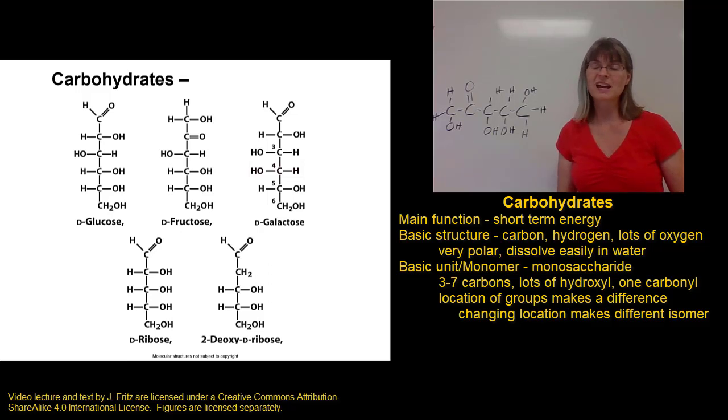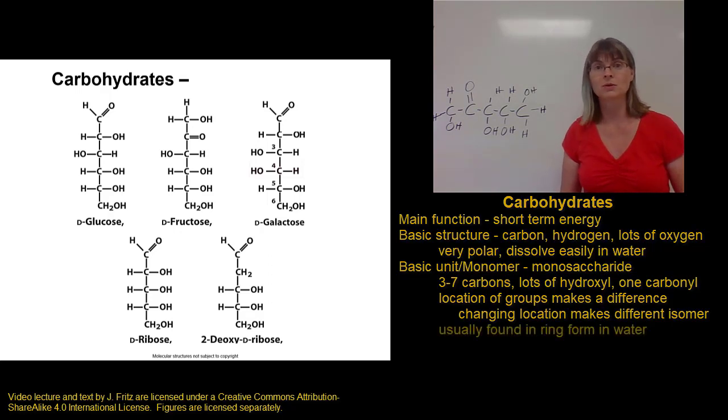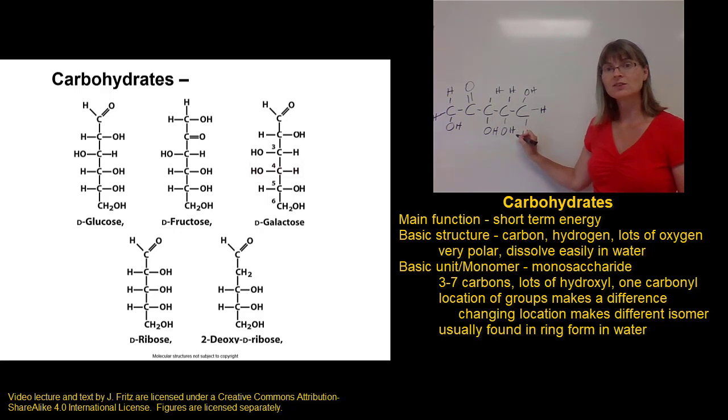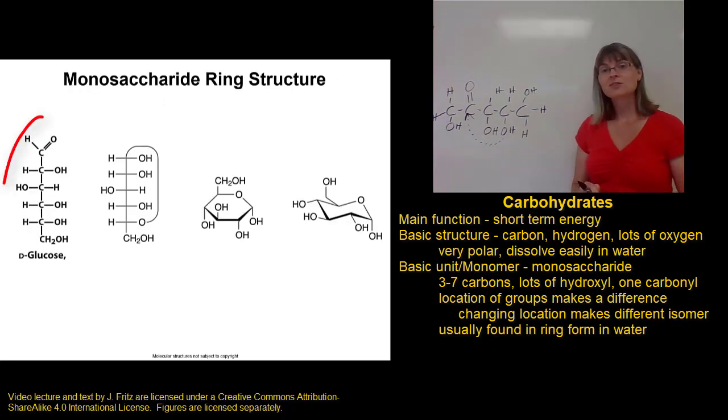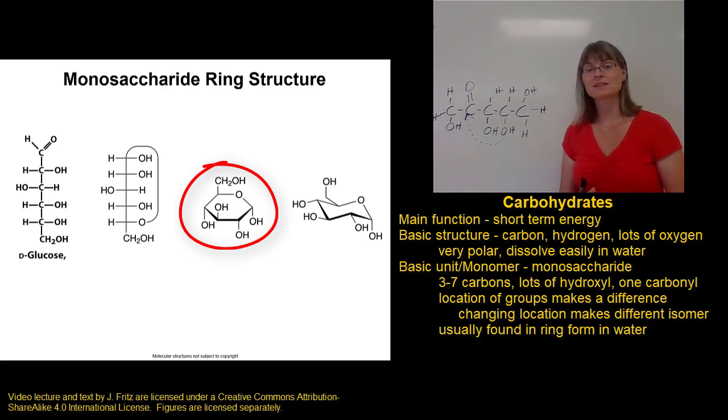One more important thing about the structure of monosaccharides is that sometimes they're found in this linear form, like I've drawn here and like what's shown on the screen right now. But in water, carbohydrates tend to take a more stable ring form. The way that works is that one of the oxygens in a hydroxyl group reaches around to bond to one of the other carbons, and this is going to form a ring. On the screen you can see the linear form of glucose, and then you can see how if one of the oxygens reaches around and bonds to one of the carbons near the end, we form a ring structure. And so a lot of times when we're looking at monosaccharides, instead of looking linear like this, they look like a ring. In order to recognize the ring form of a monosaccharide, you're really looking for the same sorts of characteristics, only instead of a line of carbons, you've got a ring of carbons with a lot of hydroxyl groups on it.